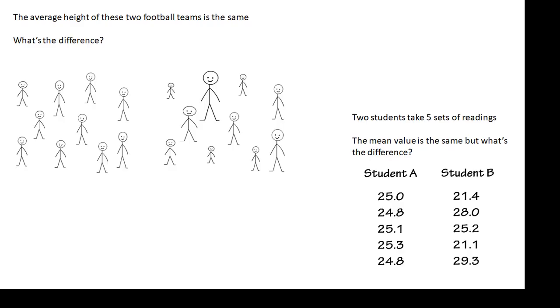And the answer is that there is a much bigger spread. There's a smaller variation in student A's results and there's a smaller variation of height in the first football team, and then there's a bigger variation in student B's results and in the second football team. There is a bigger spread in the data. There's a bigger variation.